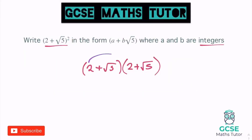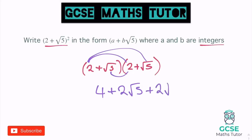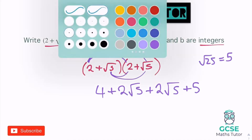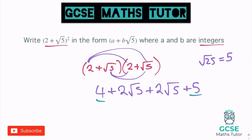Expanding from there using the same process: 2 times 2 is 4. 2 times root 5 is plus 2 root 5. Then root 5 times 2 gives another plus 2 root 5. And root 5 times root 5 is root 25 — they're both positive, so it's not going to turn negative — we just have plus 5, because root 25 is 5. Tidying up: 4 and 5 makes 9, and 2 root 5 add 2 root 5 combines to make 4 root 5.